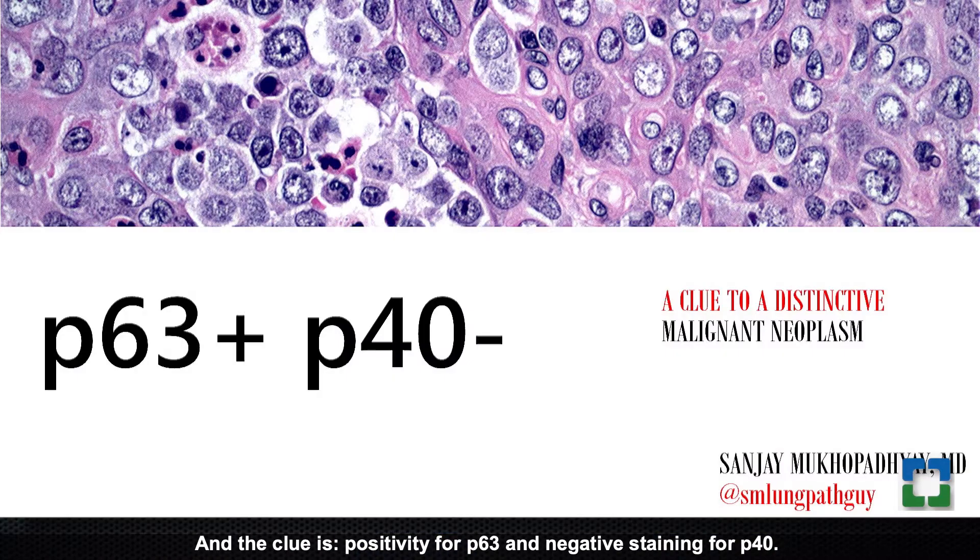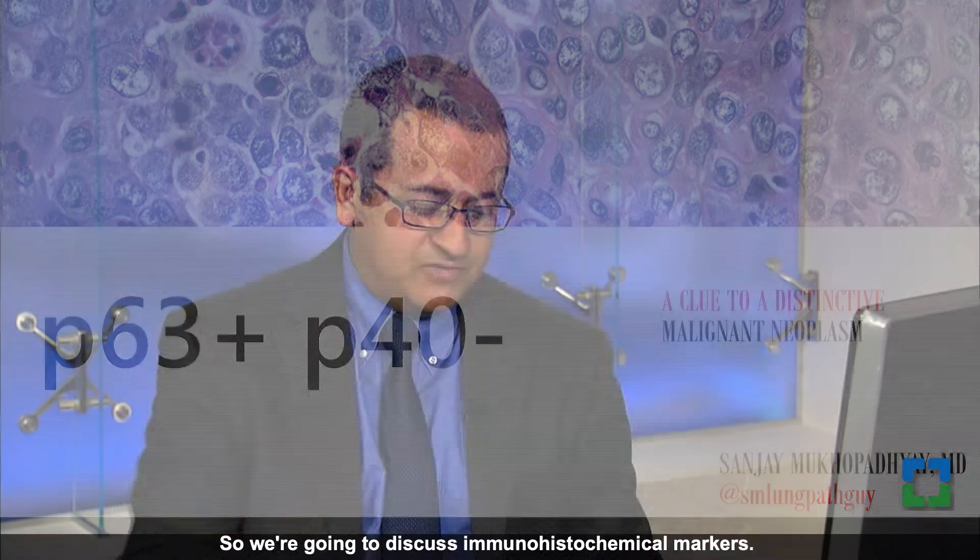Hi everyone, my name is Sanjay Mukhopadhyay. I'm director of lung pathology at the Cleveland Clinic and today we're going to talk about a very underappreciated clue to a distinctive malignant neoplasm — the clue is positivity for p63 and negative staining for p40.